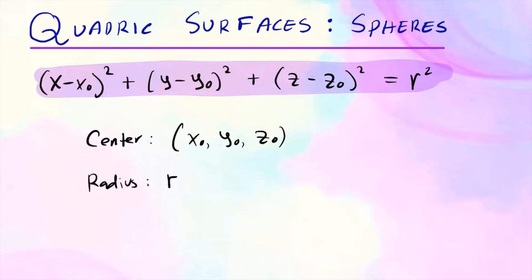So x-naught, y-naught, and z-naught — that's your center of the sphere. And the radius of the sphere would be r. Once you're able to put your equation in this form, then it's easy to sketch and identify the center and radius.